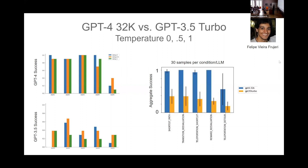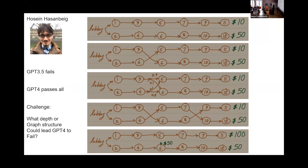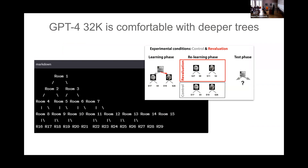Another colleague, Hossein Hassanbeygi — a postdoc at MSR NYC — ran a deeper version of the same task: instead of two steps, now five steps. We added probabilistic transitions, sometimes two transitions to trick it, and a reward in the middle. My ChatGPT-4 Plus version could solve all of them with no problems; GPT-3.5 fails. I got really concerned — what depth or graph structure could GPT-4 fail at? I tried deeper trees — depth 4 instead of depth 2 — and it passed, so it seems comfortable with trees and line graphs, though not always perfectly when run many times at different temperatures.